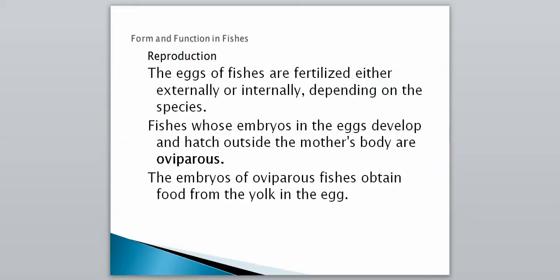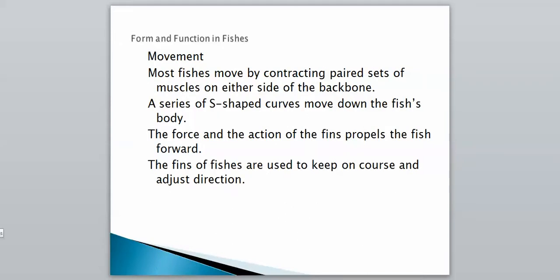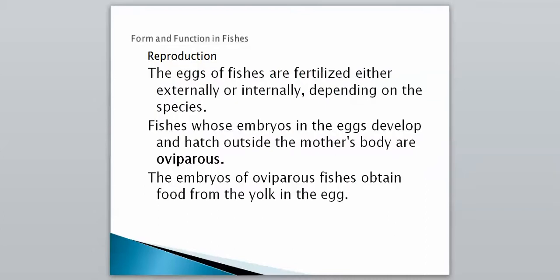So that's movement — mostly using their paired fins together to make them move. For reproduction, this is going to be a big section because there are three main types you need to know the difference between. The eggs of fishes are fertilized either externally or internally, depending on the species.